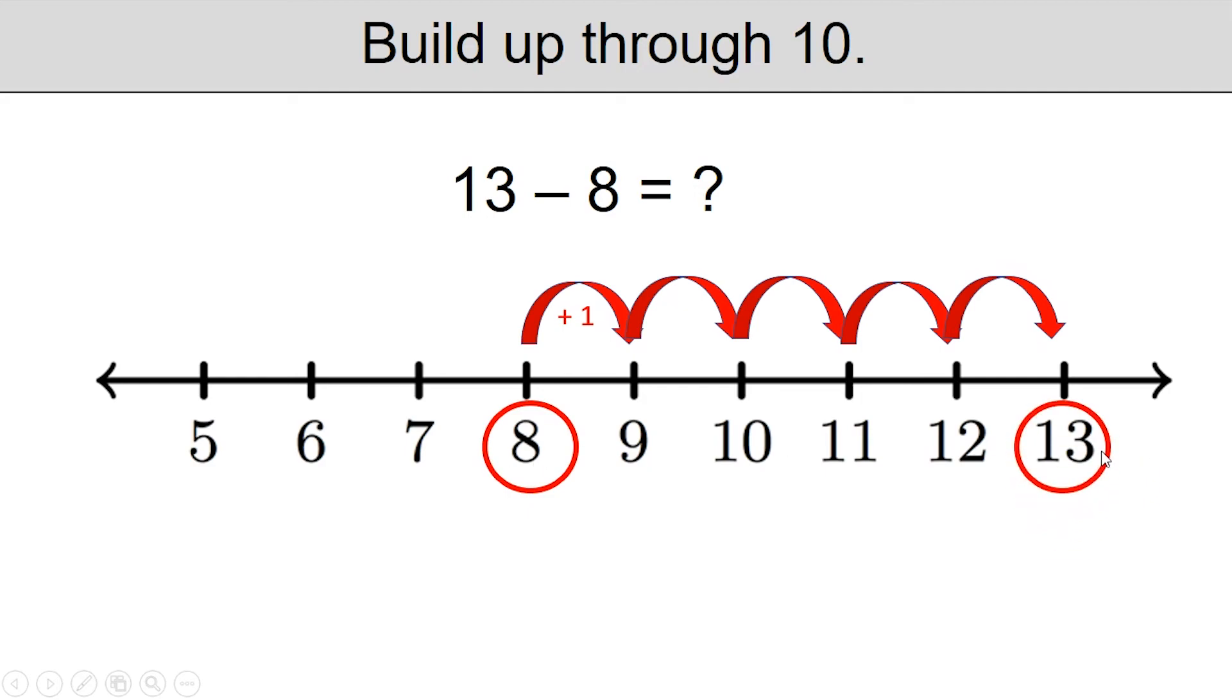So the distance from 8 to 13 is 1, 2, 3, 4, 5. Or you can think 13 minus 8 is equal to 5.